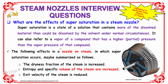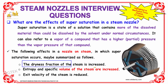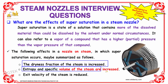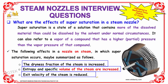The following effects in a nozzle on steam in which supersaturation occurs may be summarized as follows. The first is that the dryness fraction of the steam is increased. The second is that the entropy and specific volume of steam are increased. And finally, the exit velocity of the steam is reduced.